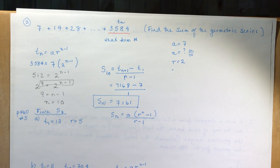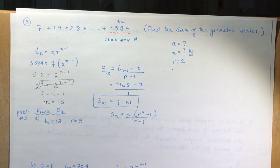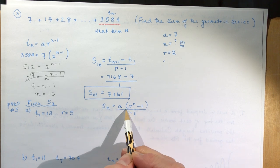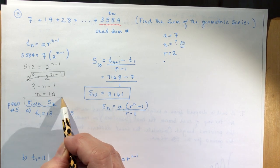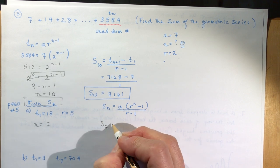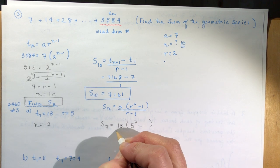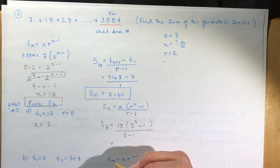Now moving to question 5. There are a couple of slightly tricky questions here, and I'm also going to do the bouncing ball question in a minute — that's one your teacher would most likely put on a test. Question 5a: the first term is 13 and r is 5. All these parts of question 5 ask you to find the sum of 7 terms, so n equals 7. The sum of 7 terms is a times r to the n minus 1, divided by r minus 1: 13 times 5 to the 7, minus 1, divided by 5 minus 1. I'll leave you to solve that one.